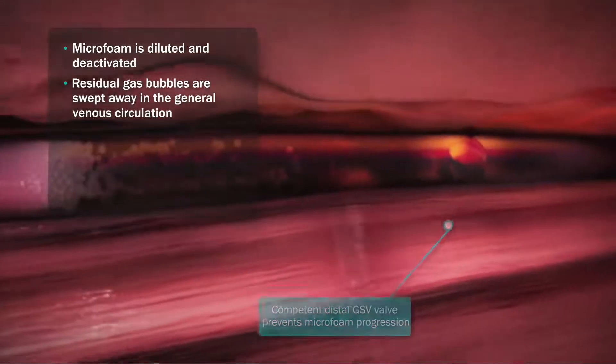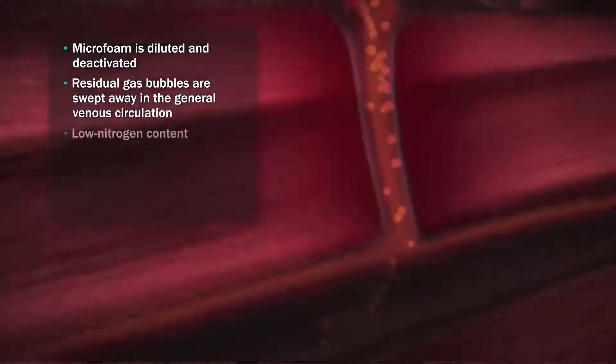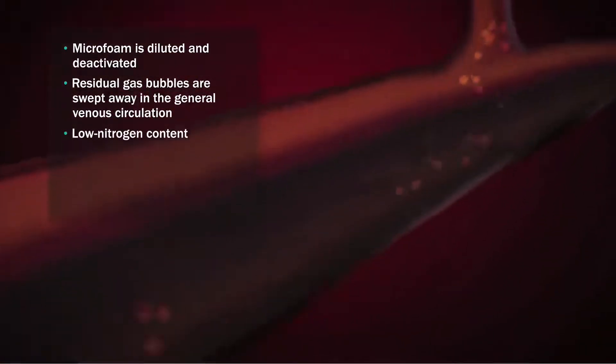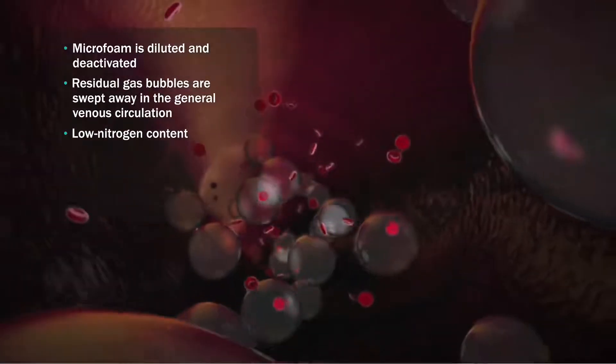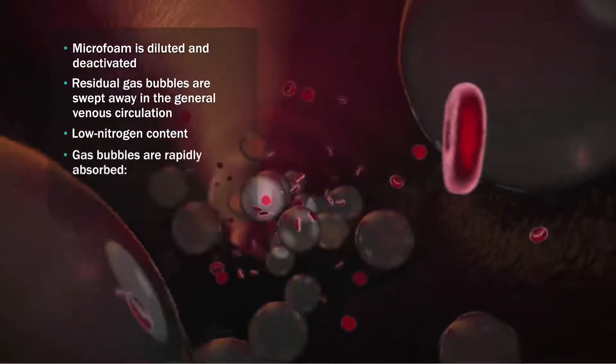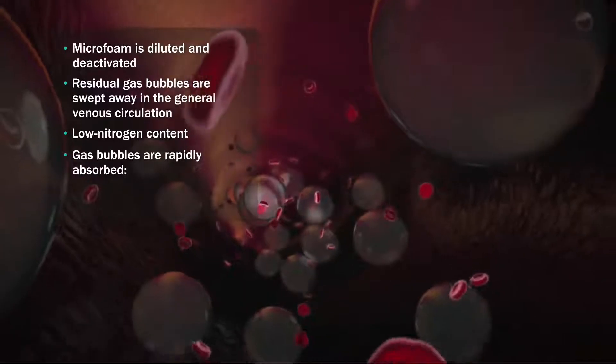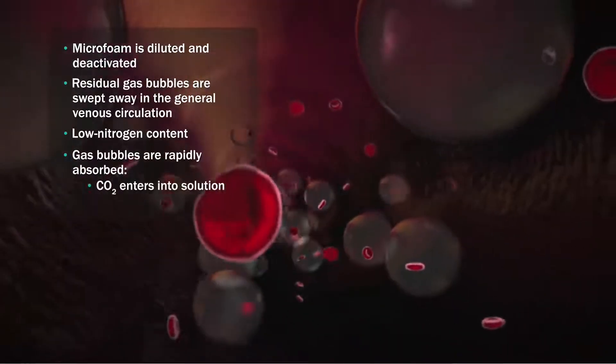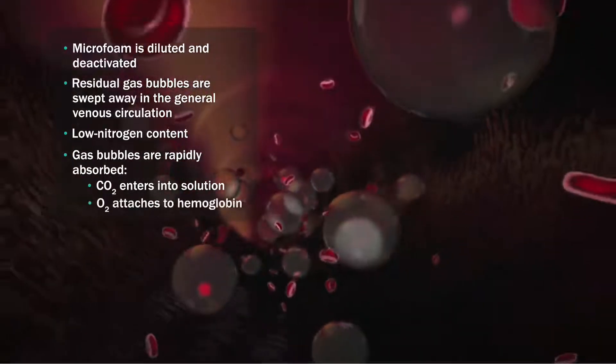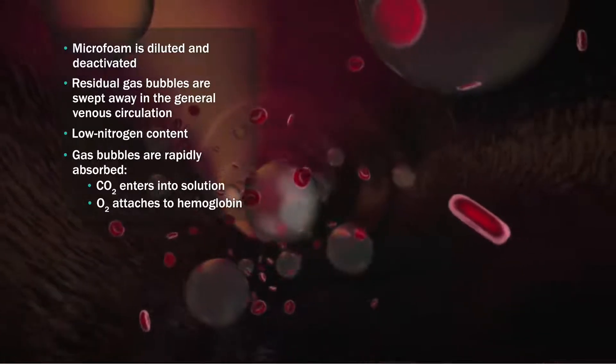Residual gas bubbles are swept away in the general venous circulation. The gas used to generate the microfoam has very low nitrogen content, no more than 0.8%. The residual gas bubbles are rapidly absorbed, the carbon dioxide goes into solution, and the oxygen attaches to deoxygenated hemoglobin in the venous blood.